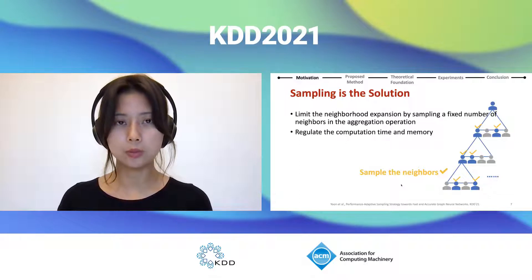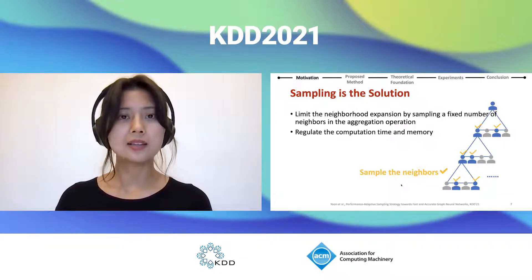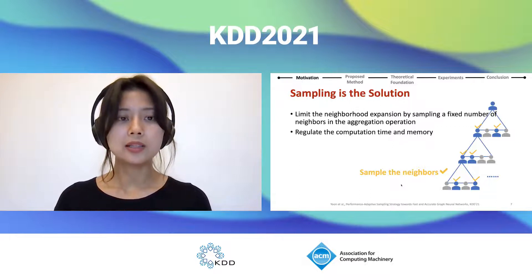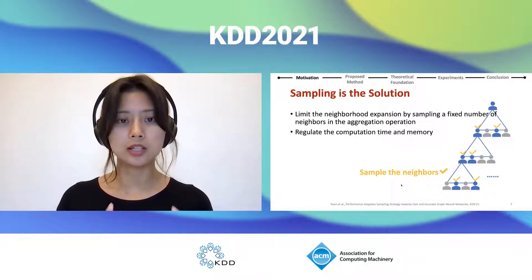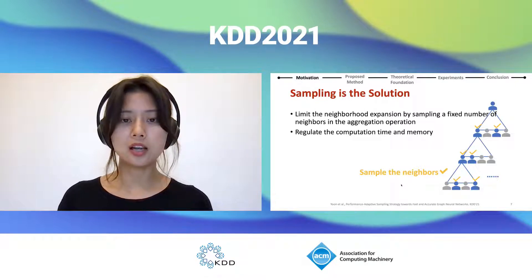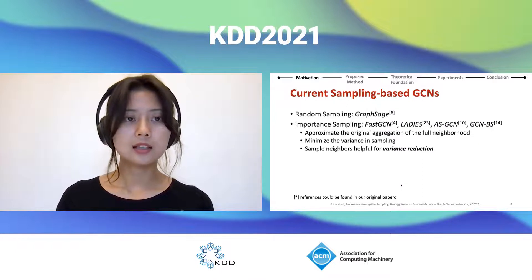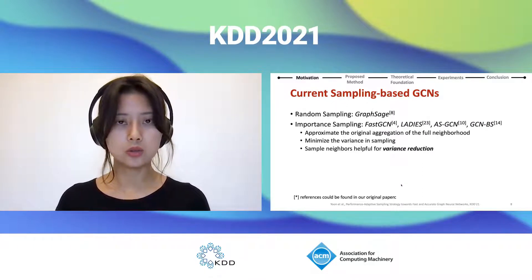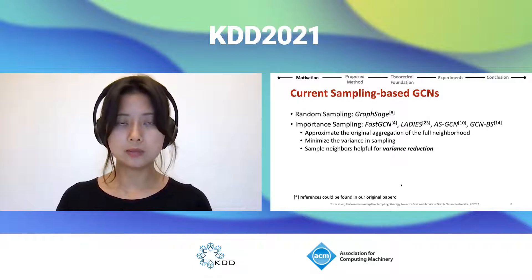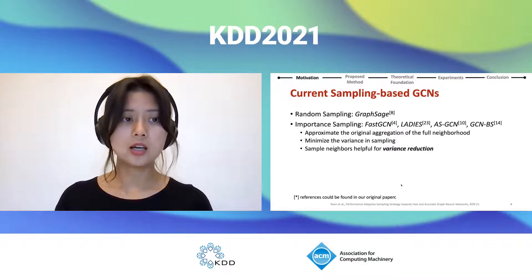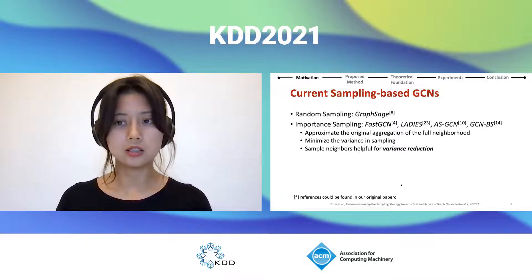Many approaches have been proposed to solve this problem, and the most simple and brute force solution is sampling. We limit neighborhood expansion by simply sampling a fixed number of neighbors in the aggregation operation, and we can easily regulate computation time and memory by changing the sampling number. Current sampling-based GCN methods can be categorized into two types: random sampling, including GraphSAGE, and importance sampling — FastGCN, LADIES-AS-GCN, and GCN-BS.